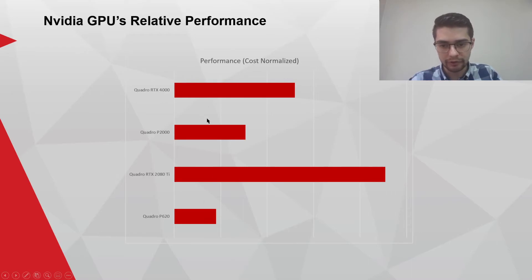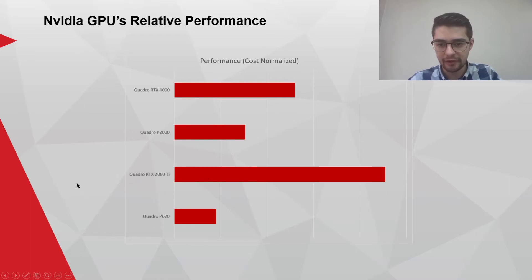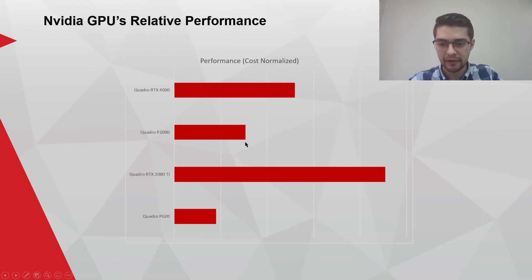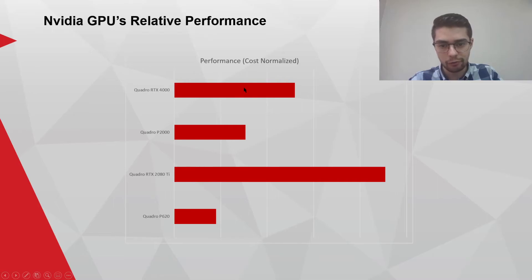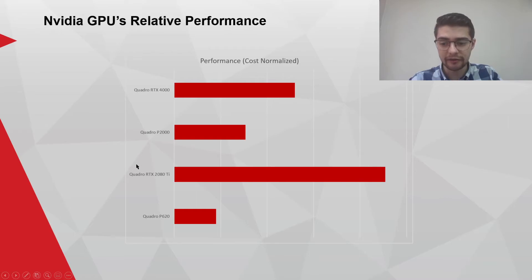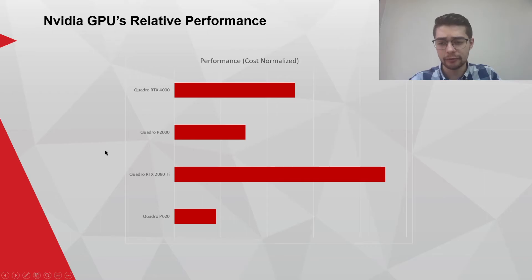A lower number here means better cost-to-performance. The RTX 2080 completely does not make sense from a cost versus performance standpoint. The P2000 is generally what we recommend for most users and performs quite well. Even the RTX 4000 outperforms the RTX 2080, which was the highest-end card available until about a month ago. There's a new graphics card that just came out and we're still waiting to see what the SolidWorks benchmarks will be.